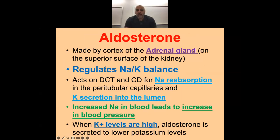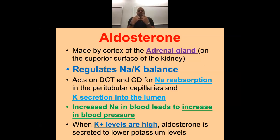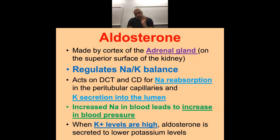Electrolyte balance: aldosterone is made by the adrenal gland, which sits on the kidneys. It produces aldosterone whenever sodium or potassium levels are altered. If aldosterone is released, sodium and potassium act as antiporters — I pull sodium back into my bloodstream and pee out potassium. If blood pressure is low or sodium level is low, I produce aldosterone, pull sodium back in, water follows, and blood pressure goes up. Potassium levels decrease.